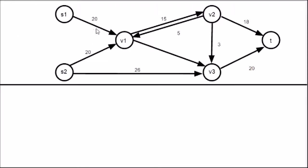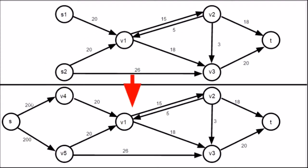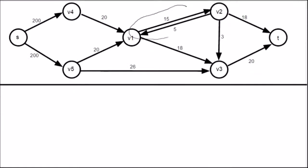This is the example that we are going to work through. You can see the immediate problem with this network is the fact that we have two sources, S1 and S2. To get around this problem, we need to convert this network. What we have done here is we have made the old sources normal vertices, V4 and V5. Added our new single source, S. And we have done edges from S to V4 and V5 with capacities that are bigger than or at least equal to any other capacity in the network. We have chosen 200. Next, we need to get rid of this edge.